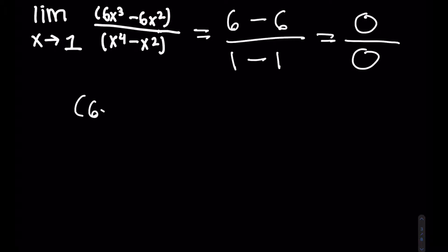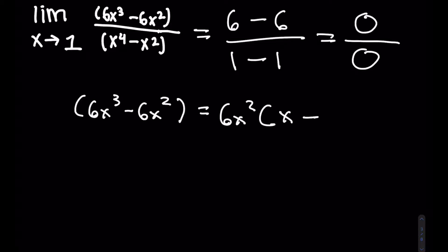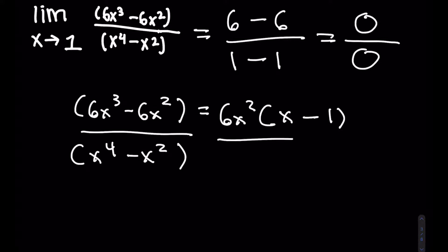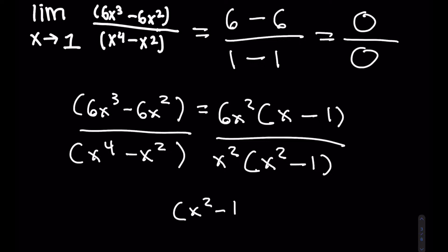For the top, 6x cubed minus 6x squared, we factor out 6x squared to get 6x squared times (x minus 1). For the bottom, x to the 4th minus x squared, we factor out x squared to get x squared times (x squared minus 1). Now x squared minus 1 is a difference of perfect squares, so we can factor it as (x minus 1)(x plus 1).